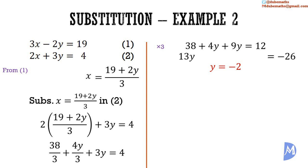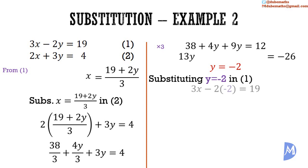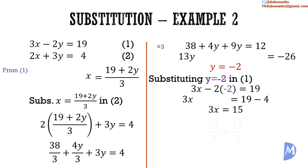Now we substitute y equals negative 2 in any one of the equations. Substituting in equation 1, we get 3x minus 2 multiplied by negative 2 is equal to 19. Negative 2 times negative 2 is positive 4, so 3x plus 4 is equal to 19. Subtracting 4 from both sides: 3x is equal to 15. Dividing both sides by 3, x is equal to 5. The solution is x equals 5 and y equals negative 2.